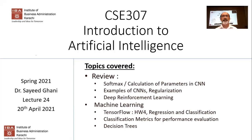We'll do a review of the previous lecture where we spoke about softmax, looked at examples of CNN, deep reinforcement learning, and deep Q networks. Today we're going to be covering TensorFlow briefly, just to give you an idea of what homework number four will be about. We'll look at two examples of regression and classification, and then several types of different classification algorithms besides deep neural networks and ANNs.